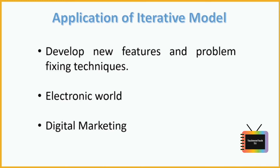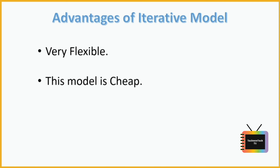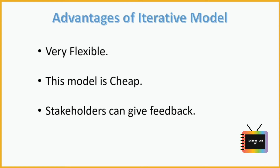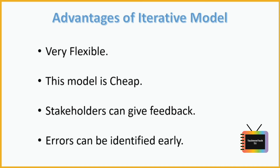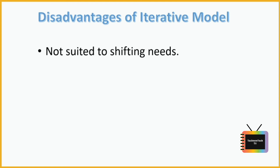The use of an iterative model is not limited to one industry. Due to its features like parallel development, multiple testing, and early risk identification, it is adapted by various industries including electronics, marketing, and sales. Now let's discuss the advantages. This model is very flexible, as new functionality can be added at any time during development. It is also less costly to change requirements compared to other process models. Stakeholders can give feedback quickly, which can then be implemented into the system. Additionally, errors and bugs in the system can be identified early.